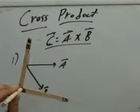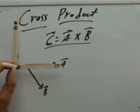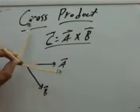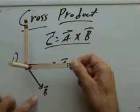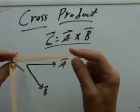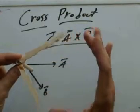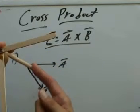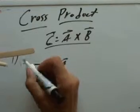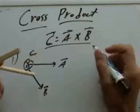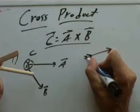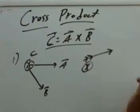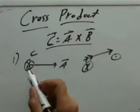I get out my popsicle stick unit and point the first stick in the direction of vector A. Now I have to get the second stick in the direction of vector B. I have to keep vector A aligned, so the only way to get stick B aligned with vector B pointing down is to rotate the whole thing upside down. A points over this way, and B lines up pointing down. In either case, I see my C vector pointing down into the page. So the C vector would point into the page, represented by a cross symbol indicating the vector moving away from you.